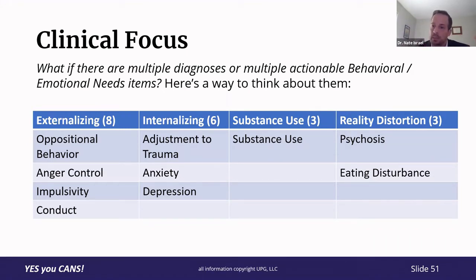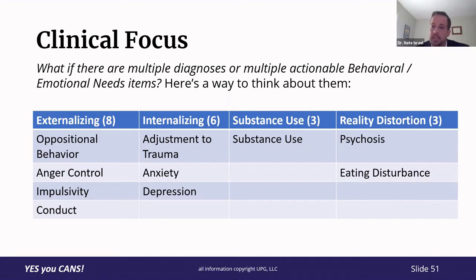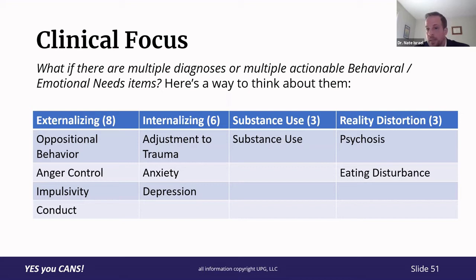Externalizing problems are going to be treated by identifying ways to reduce some of these behaviors and put appropriate replacement behaviors in place. These internalizing problems that we're going to work on involve the thoughts and ruminations that consistently trigger them or keep them going, and then the ways to replace those behaviors and concerns and that physiology with different ones.